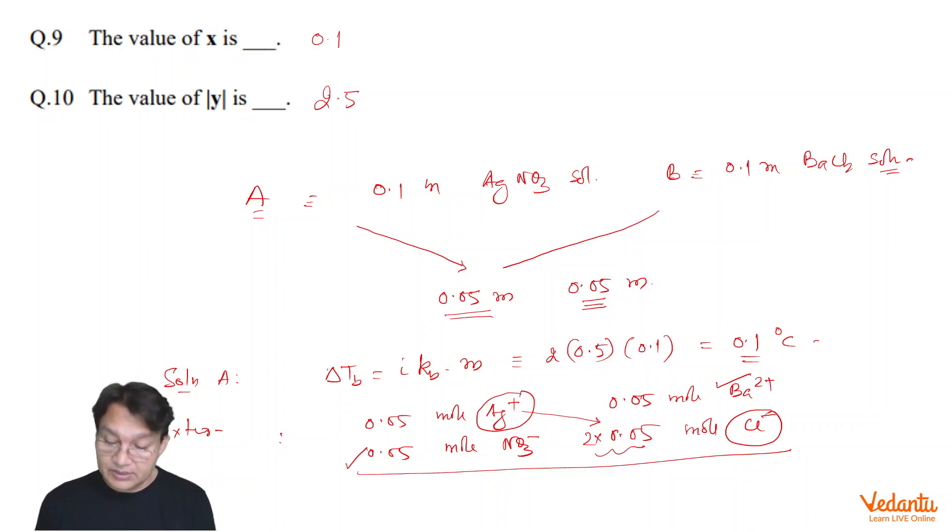remaining Cl negative will be there in the solution. So, carefully looking into this, the concentration of all the ions will be, concentration of all the ions will be 0.05 into 3.